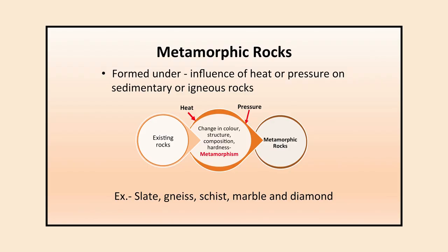The third major category is metamorphic rocks, formed under the influence of extreme heat and pressure on sedimentary or igneous rocks. When extreme heat or pressure is subjected to any igneous or sedimentary rock, metamorphic rocks are formed. When existing rocks are subjected to extreme heat and pressure, there is change in color, structure, composition, and hardness — this whole process of change is known as metamorphism.